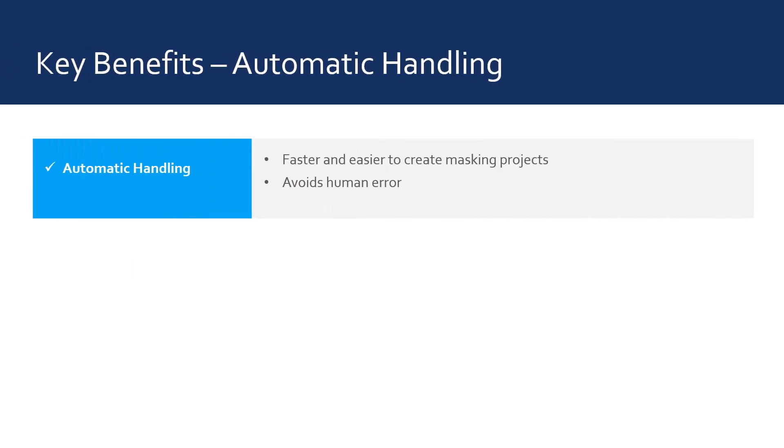The benefits of DataVal's automatic handling is that it takes the burden off the user, making it easier to create masking projects in less time. It also avoids human error, particularly if there are dependencies and the project is edited sometime later — say in a year from now — by another user who may not be fully aware of the importance of some of those dependencies.